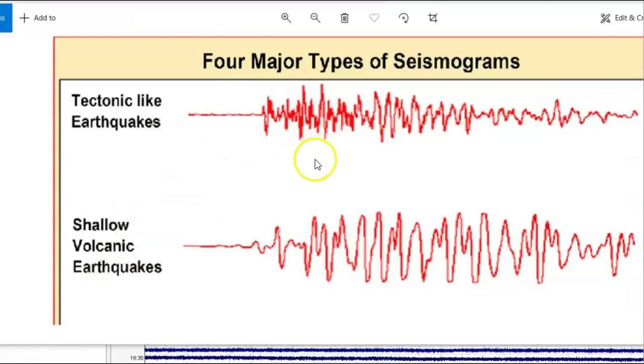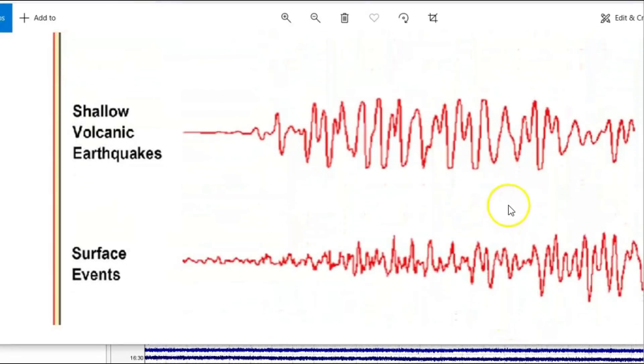So here I made it larger tectonic like earthquakes. They got the sharp points at the top. Shallow volcanic earthquakes. They have rounded tops and this is when we got magma coming into a system, recharging a volcano. Surface events start out very quiet and then slowly grow.